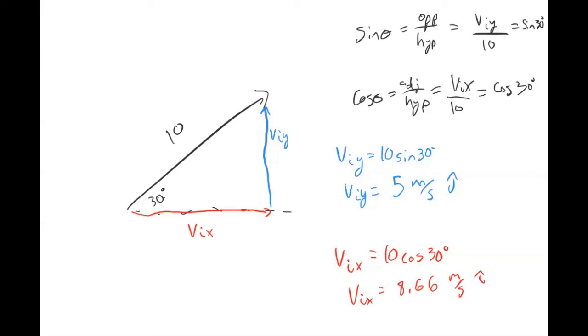And if you're unsure if you broke your components up you can always do Pythagorean theorem to check. So check: does 5 squared plus 8.66 squared under square root equal 10? Yep.